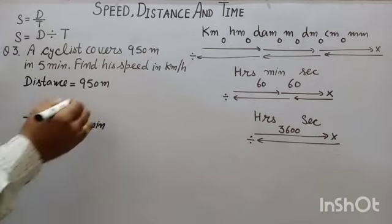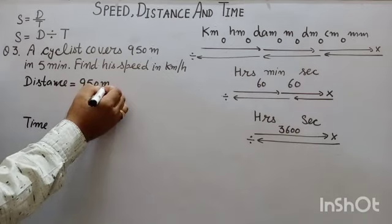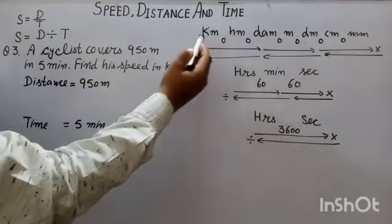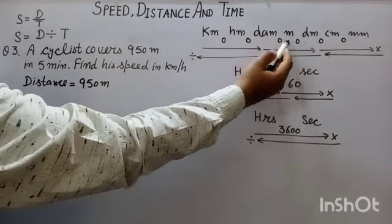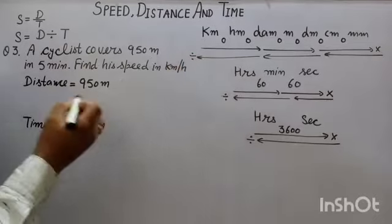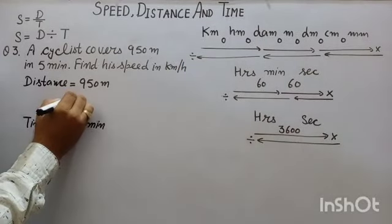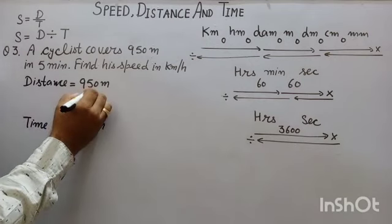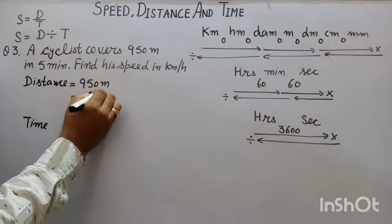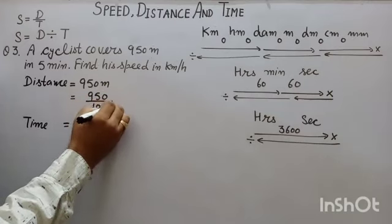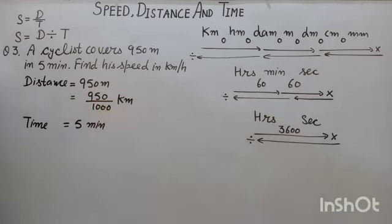First of all, we will convert meter into km. From smaller to bigger. Three zeros are there. So, to convert meter into km, we will divide: 950 upon 1000 km.